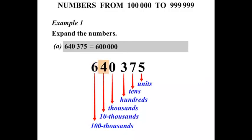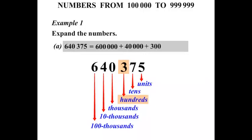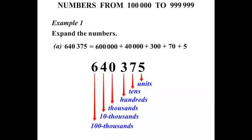Now that 4 is worth 4 lots of 10,000. 4 tens are 40, so we have 40,000 to add. The next one, 0, is in the thousands column, but 0 lots of 1,000 is still 0, so we can ignore the 0 there. Moving on to the 3 — three hundreds, so we add 300. The 7 is in the tens column, so 7 tens are 70 — let's add 70. And finally, the 5 is in the units column, and 5 times 1 is simply 5, so we add 5 at the very end. So we've expanded that number.